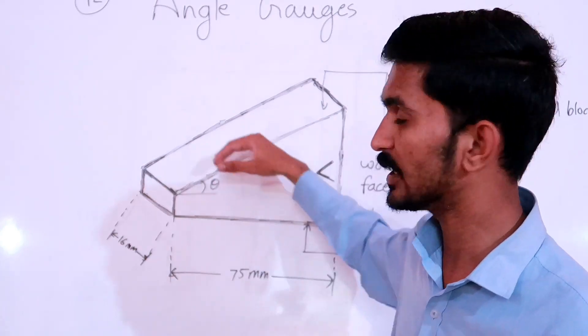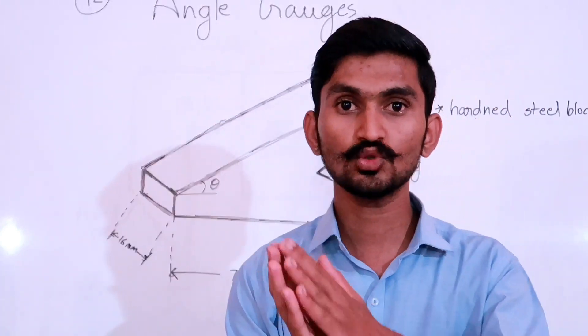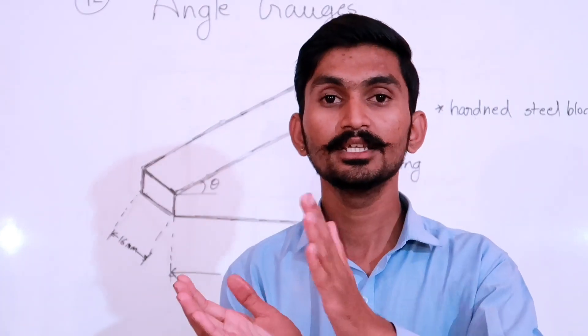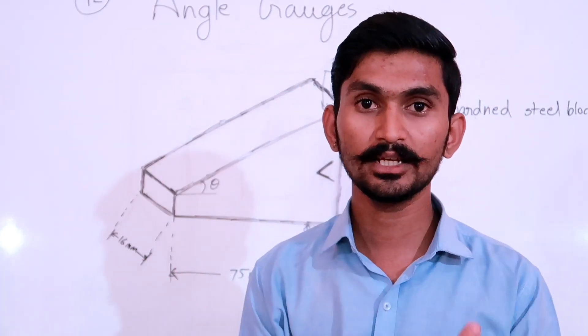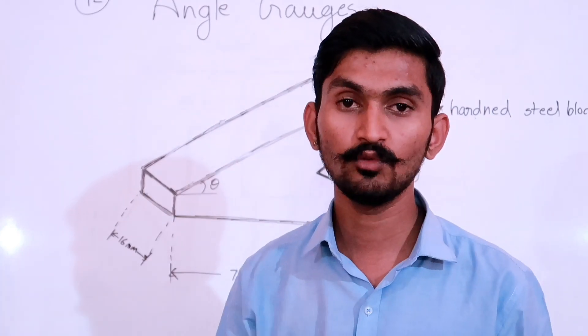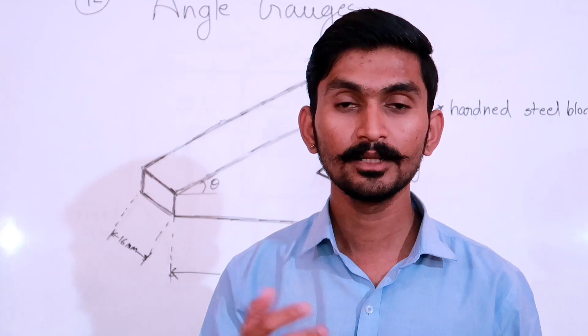Addition means that you have two angle gauges and you add their angles to create a bigger angle. That is the addition of angle gauges.